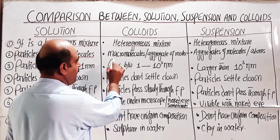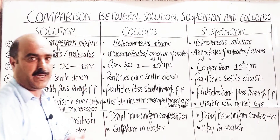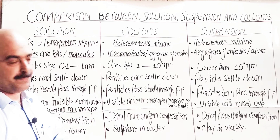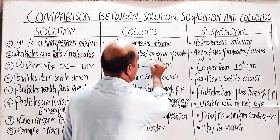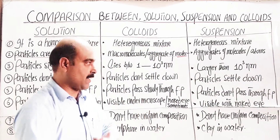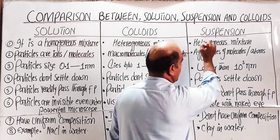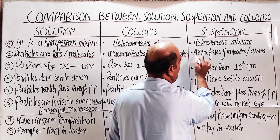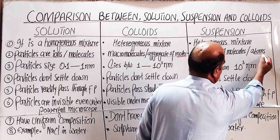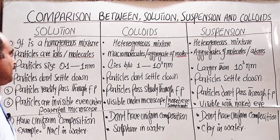In colloids, the solute particles are large molecules or big molecules — larger in size — or aggregates of molecules, meaning groups or clusters of molecules. In suspension, the solute particles are also aggregates of molecules, or atoms, or groups of molecules and atoms.